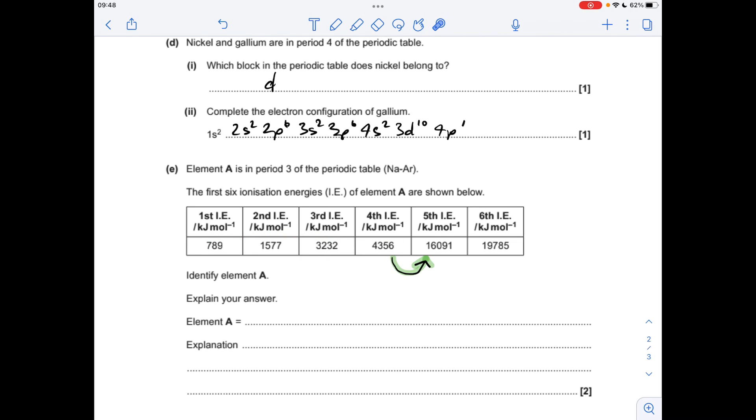And the explanation I'll give is, there's a big increase in ionisation energy between the 4th and the 5th. That means the 5th electron must be in a shell closer to the nucleus.